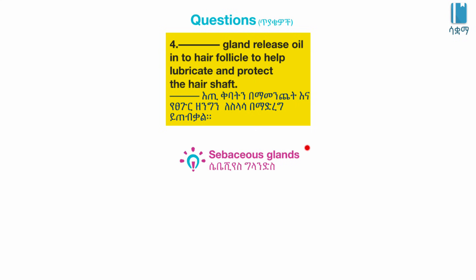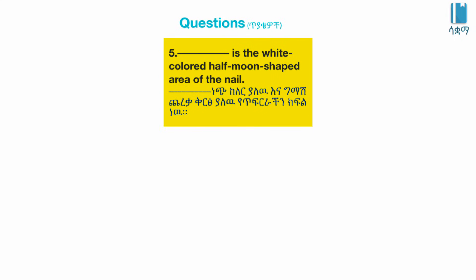Sebaceous gland. The lunula is the white colored, half moon shaped area of the nail.